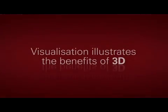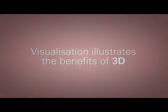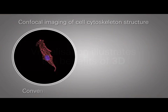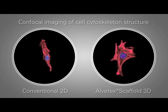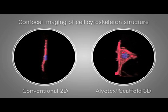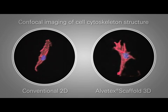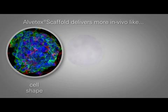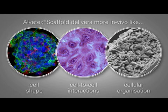This visualisation illustrates the benefits of 3D — confocal imaging of cell cytoskeleton structure. On the left, conventional 2D, and on the right, Alvatec Scaffold 3D. Alvatec Scaffold delivers more in vivo-like cell shape, cell-to-cell interactions and cellular organisation.